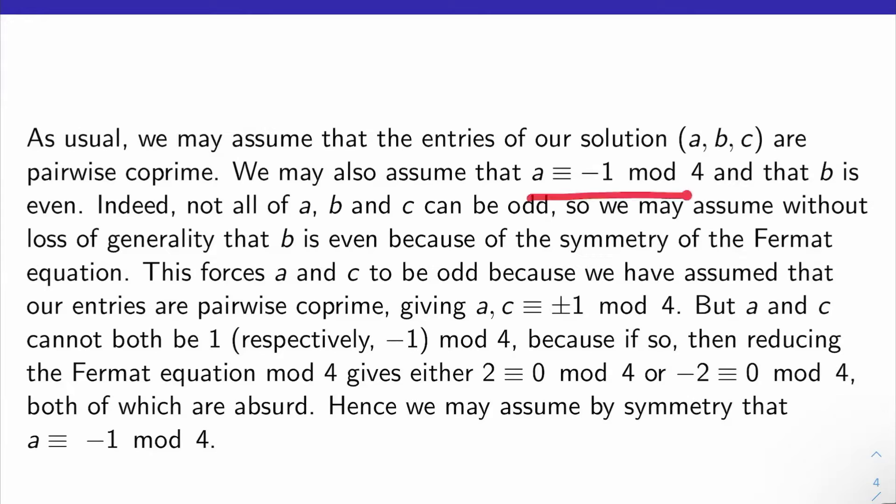We can also assume that a is -1 mod 4 and that b is even. Indeed, not all of a, b, and c can be odd, as you can check from the Fermat equation. So you can assume without loss of generality by the symmetry of that equation that b is even, but that forces a and c to be odd, because we've assumed that our entries are pairwise co-prime. So a and c are ±1 mod 4, but a and c can't both be one, respectively, -1 mod 4, because if so, then if you reduce the Fermat equation mod 4, you get either 2 ≡ 0 mod 4 or -2 ≡ 0 mod 4, which is a contradiction. And so by the symmetry of the equation, I can assume without loss of generality that it's a that's -1 mod 4.